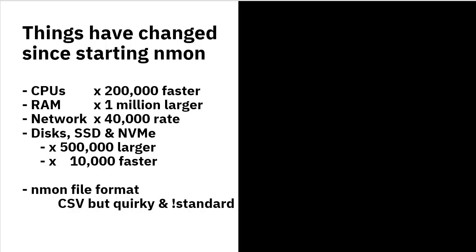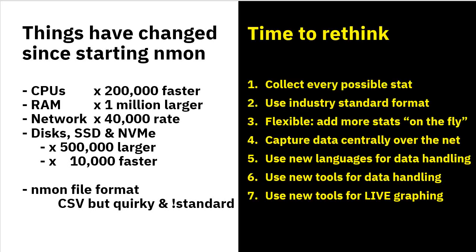In the 20 years or more since nmon was designed and developed, computers have changed beyond recognition — they're so much faster, memory is bigger, networks and disks are much faster but also much larger. These were limitations when we started nmon, and we would have done things differently if starting again. The nmon file format is comma-separated values, but it's quite quirky — we were forced to make compromises because of limitations in Lotus 1-2-3 and Microsoft Excel spreadsheets. So with our super-fast computers today, what sort of things would we actually change?